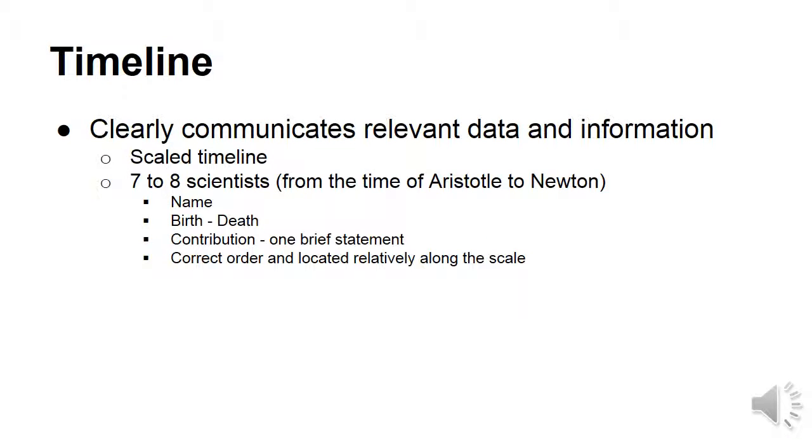So summing that up again, you want a scaled timeline, seven to eight scientists that include just their name, their birth and death, one brief statement to say how they contributed, the correct order, and locate them relatively along the scale. And it's when the model was proposed as opposed to their birth or death is where you fit them along the scale.